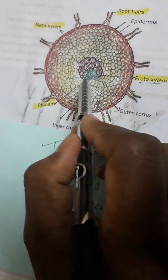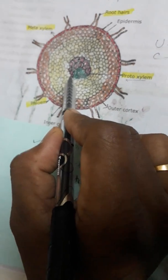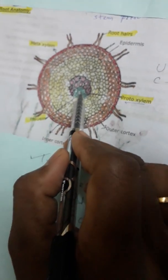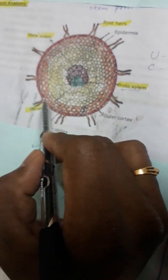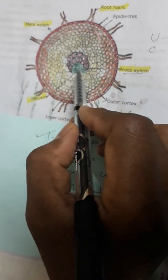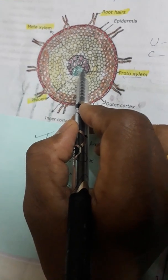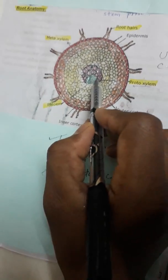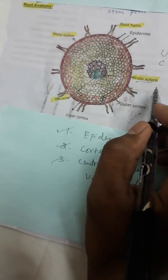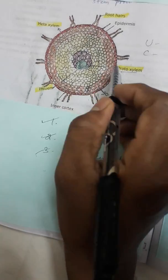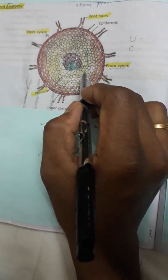In between the two proto-xylem arms, phloem is filled. Xylem and phloem are both present together. The arrangement may be uni-arch, and with maturity it can convert into tri-arch or di-arch. The xylem looks U-shaped.